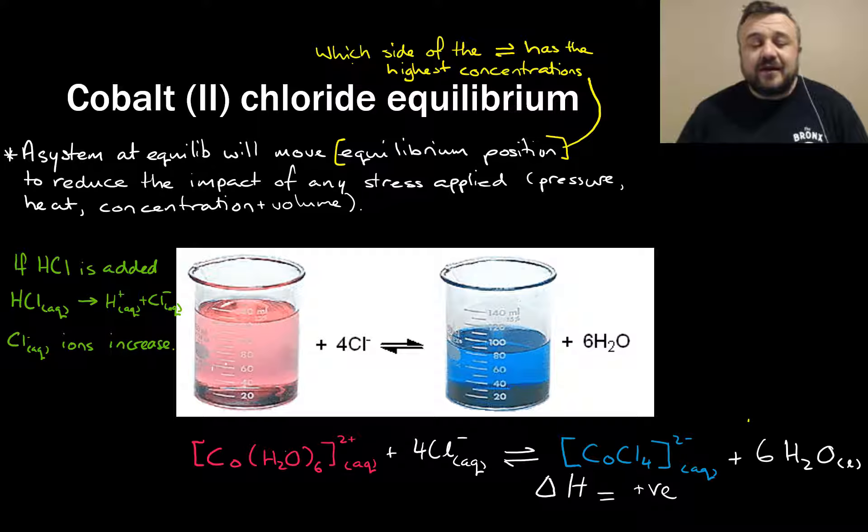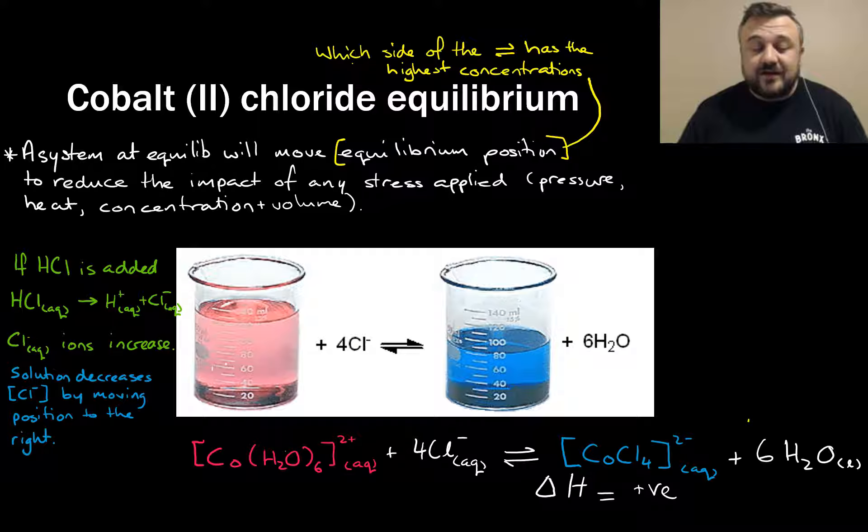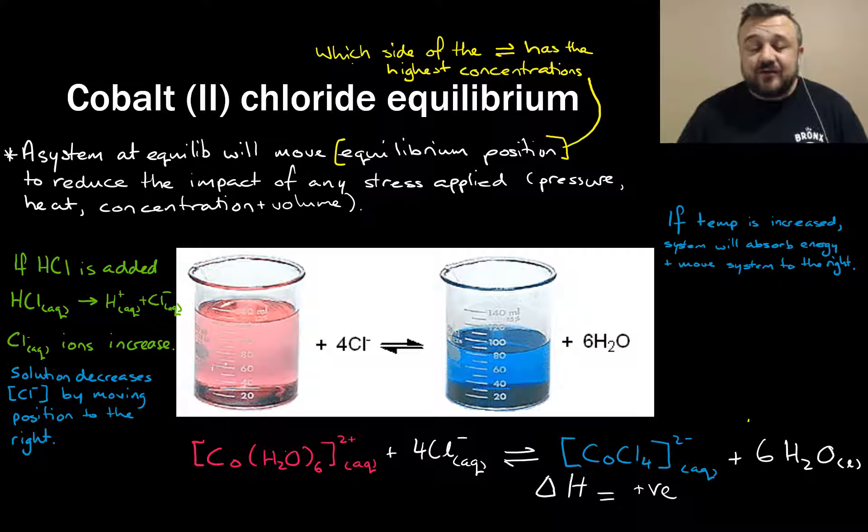So if we add hydrochloric acid, one of the cool things that happens is HCl is added. This gives us more chloride ions. So the chloride ions increase, and the solution decreases the presence of these chloride ions by moving the position to the right. So we'll actually make more cobalt chloride complex and our solution will become more blue. That's kind of awesome. If the temperatures increase, remember, this is an endothermic reaction, the system will absorb the energy and move the system to the right. So again, it will become more blue.